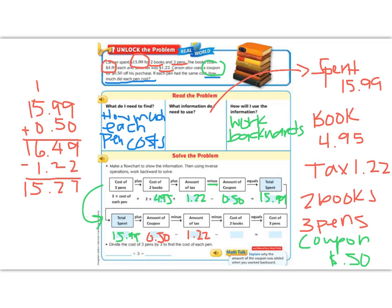Now we're going to subtract out the cost of 2 books. So if we have $4.95 times 2, that gives us $9.90. So we're going to subtract out $9.90. 7 minus 0 is 7. 2 minus 9 we can't do, so we have to borrow. 12 minus 9 is 3. 4 minus 9 we can't do, so we have to borrow again. 14 minus 9 is 5. So that's $5.37.